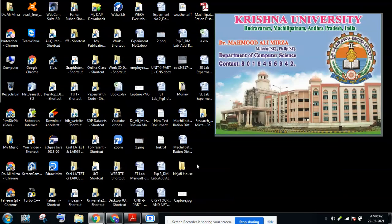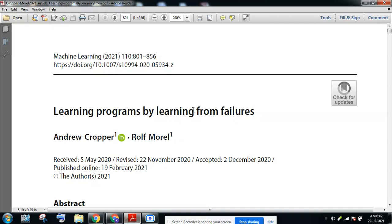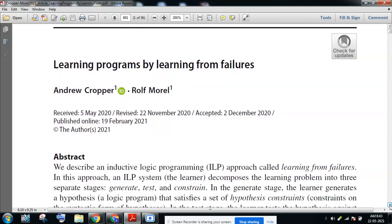So this article is one of the good research articles and you can see the length of the article is just like 56 pages. Initially if any newcomers are there in the research field they may just drop out this article by seeing the length it has but actually it has good knowledge and information. The article name is learning programs by learning from failure. It is a part of machine learning where it is going to learn by its failures and trying to improve its logic and programming.